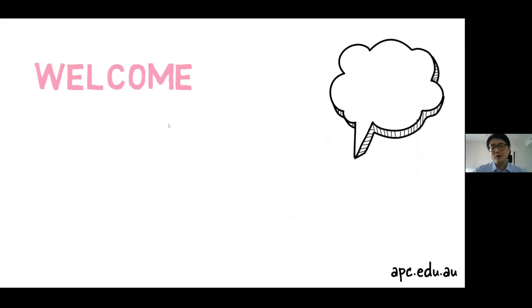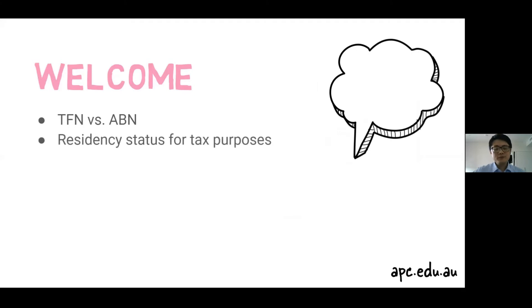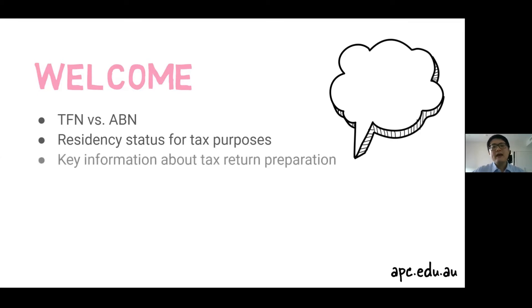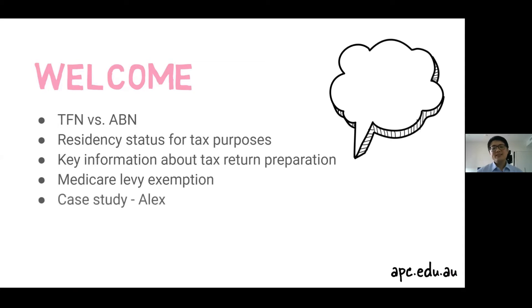My name is Brian Nhi, the accounting trainer at APC. I'm here today to give you some basic information you may need to know when you prepare the Australian tax return. My presentation will cover: the difference between Tax File Number and Australian Business Number; how to determine residency status for tax purposes as an international student; basic ideas for preparing your tax return; how to apply for the Medicare levy exemption; and we'll meet our virtual friend Alex to work through some taxation questions.